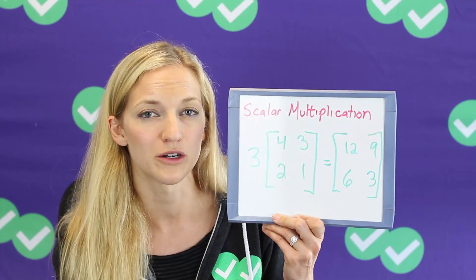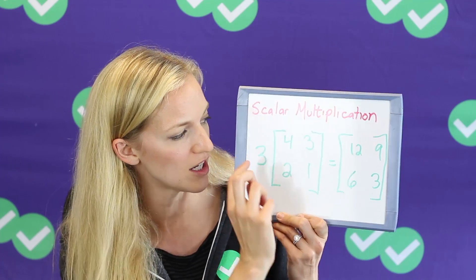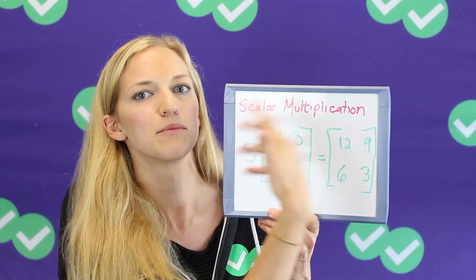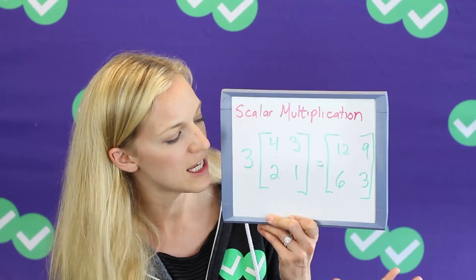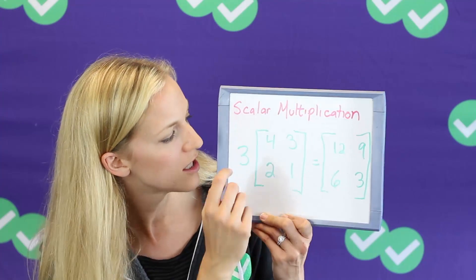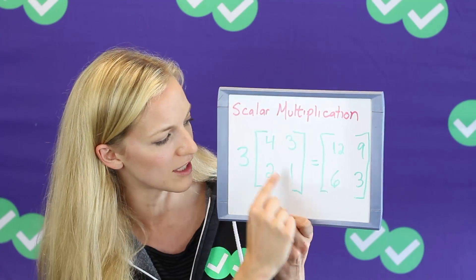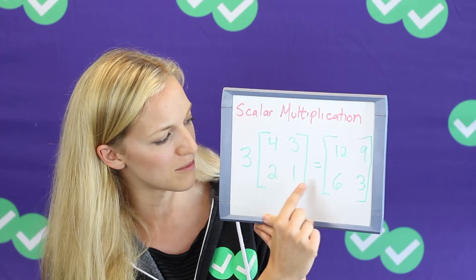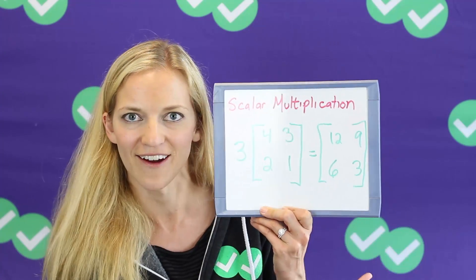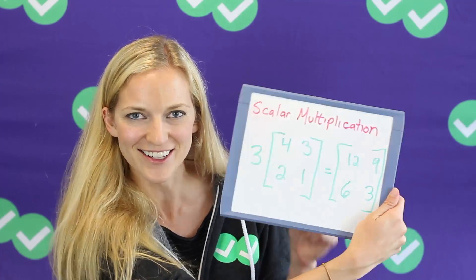And all we're going to do is multiply each term by three to get its corresponding product, its corresponding result in our product matrix. So three times four gives us 12, three times three gives us nine, three times two is six, and three times one is three, and that is our answer. All right, also pretty easy.